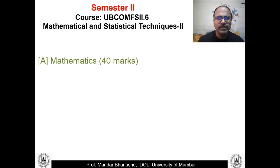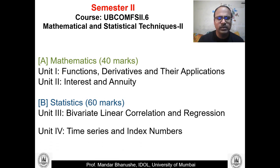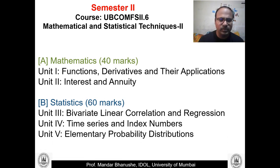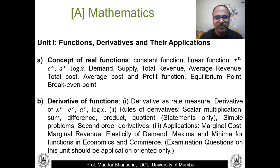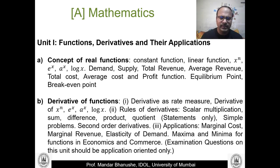In Semester 2 we have the same pattern — Section 1 of Mathematics and Section 2 of Statistics — again with five units. Unit 1 is on Functions, Derivatives, and their Applications. We define functions, describe different types of functions related to commerce and management, and then study differentiation. Derivatives here mean a rate measure, so we cover rules of differentiation, second-order derivatives, and applications in commerce and economics such as marginal cost, average cost, marginal revenue, and elasticity of demand.